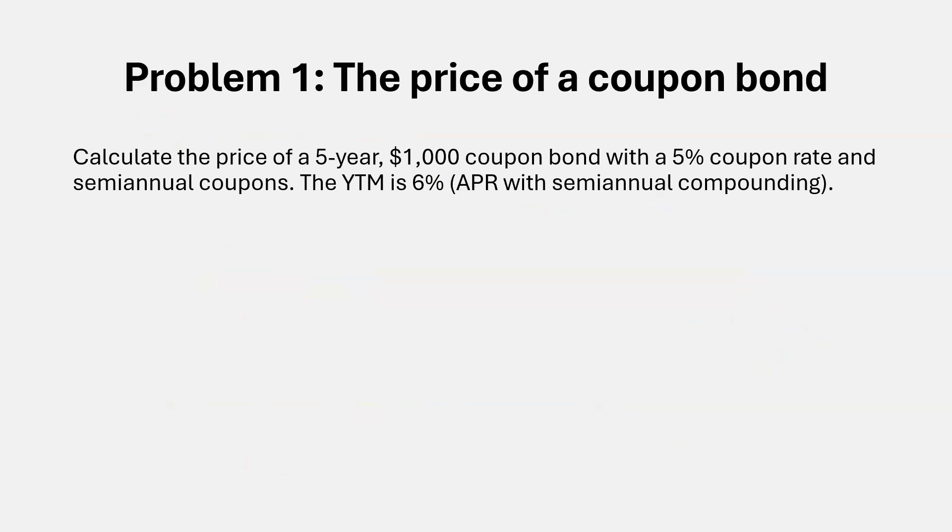Now that we understand how bonds look like, let's look at our first problem where we will try to compute the price of a coupon bond. So what we have here is a five-year coupon bond. This is the face value, $1,000. The coupon rate is five percent, and it says semi-annual coupon payments. So this means that the annual coupon payment will be five percent times thousand dollars, which is $50. So 50 dollars in total per year, or 25 dollars every six months.